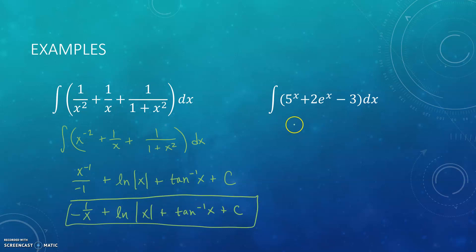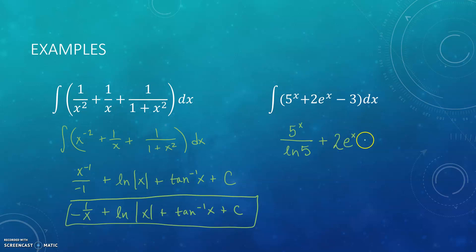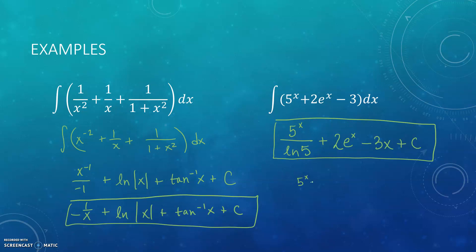For 5 to the x, the antiderivative would be 5 to the x divided by natural log of 5. You can have a constant in front — it just stays out in front. So the antiderivative of 2 times e to the x is 2 times e to the x. The antiderivative of 3 would be 3x, and then plus C. Remember, you can always check these answers by taking a derivative: the derivative of 5 to the x is 5 to the x times natural log of 5, so that's why the divided by natural log of 5 cancels. The derivative of e to the x is e to the x, and the derivative of 3x is 3.